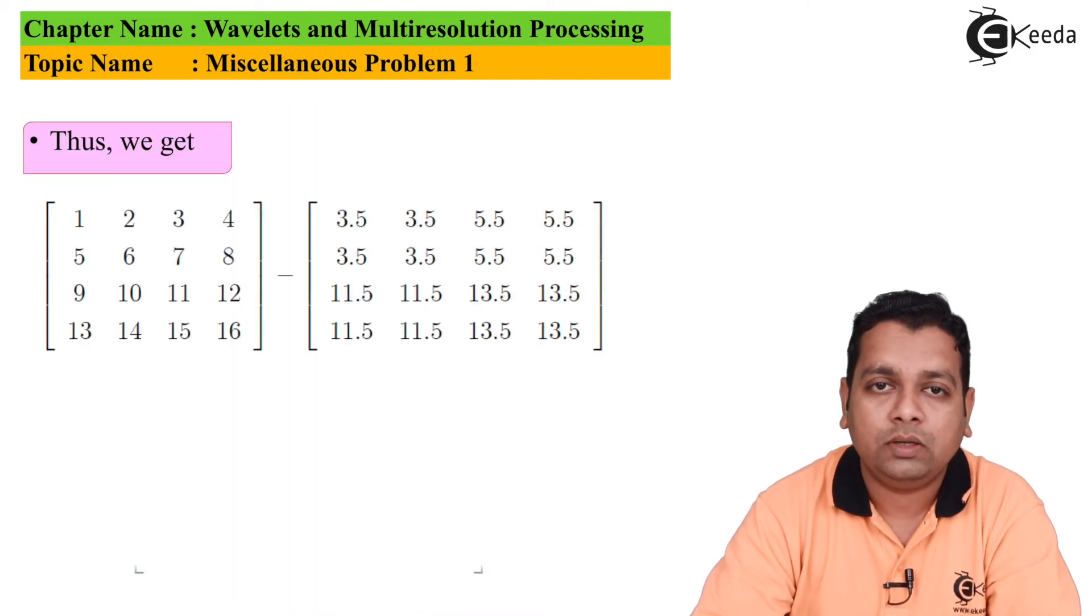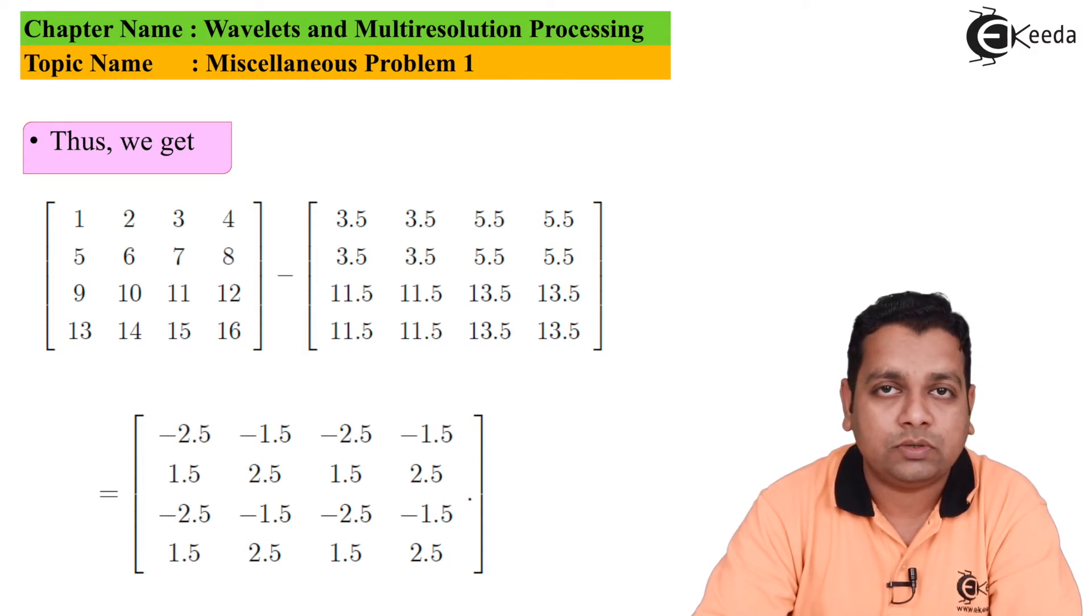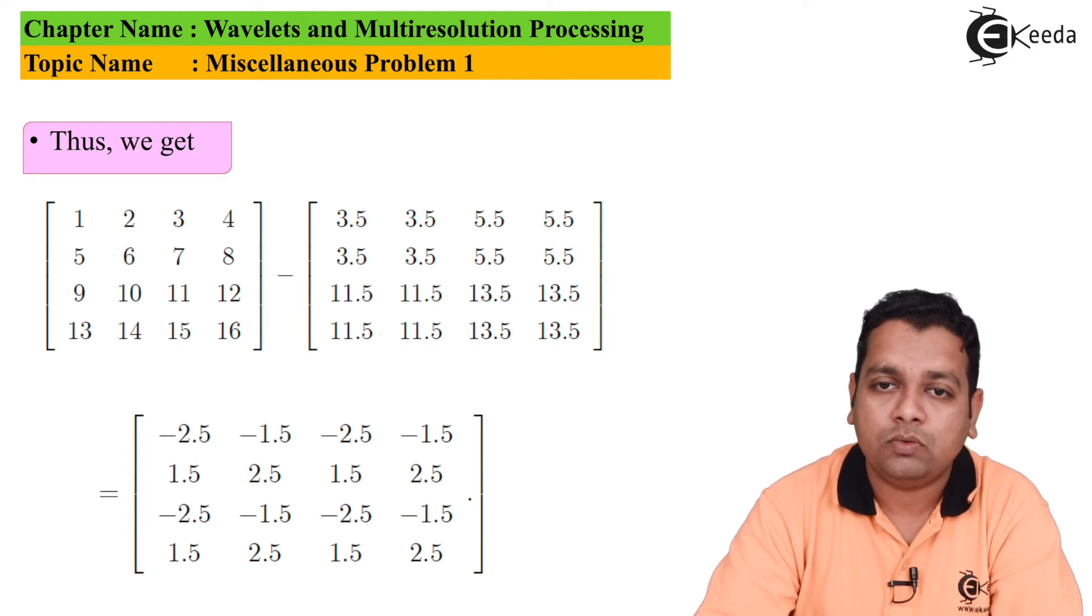Thus we obtain the original image minus the values obtained by having the pixel replications and averaging, subtracted from the original image. The resultant has first row: -2.5, -1.5, -2.5, -1.5. Second row: 1.5, 2.5, 1.5, 2.5. Third row: -2.5, -1.5, -2.5, -1.5. Last row: 1.5, 2.5, 1.5, 2.5.